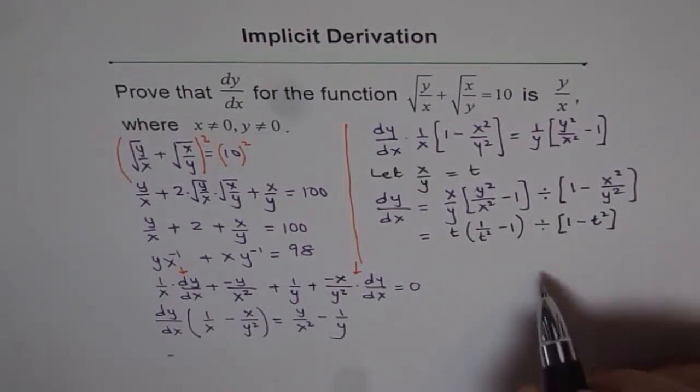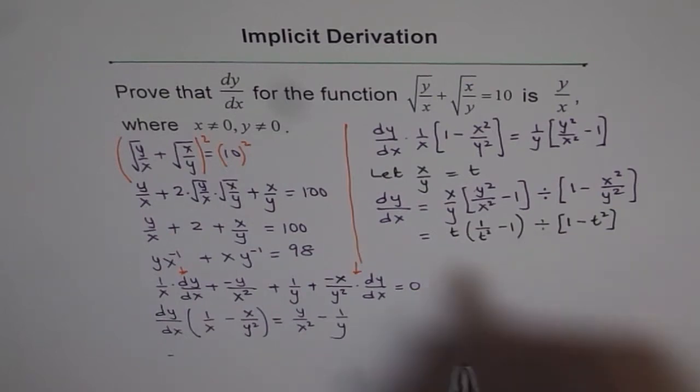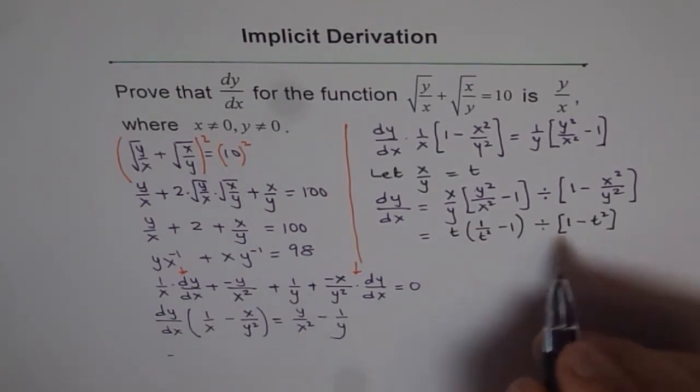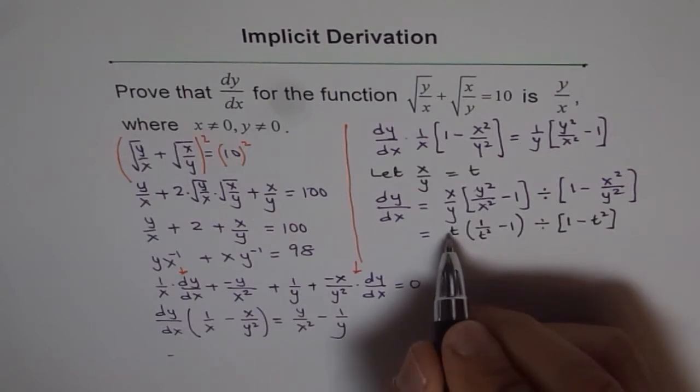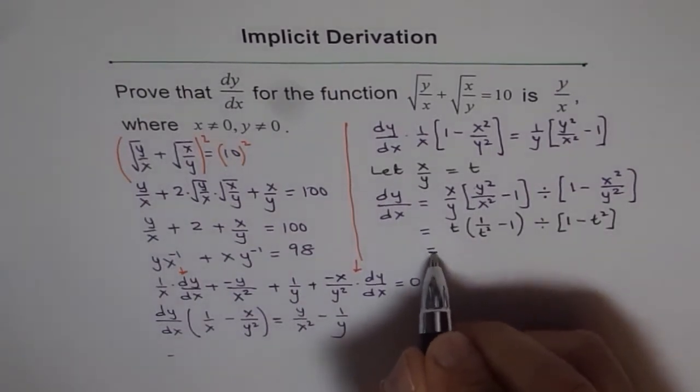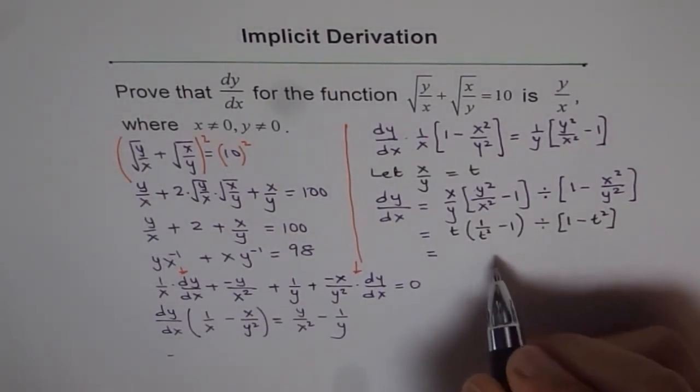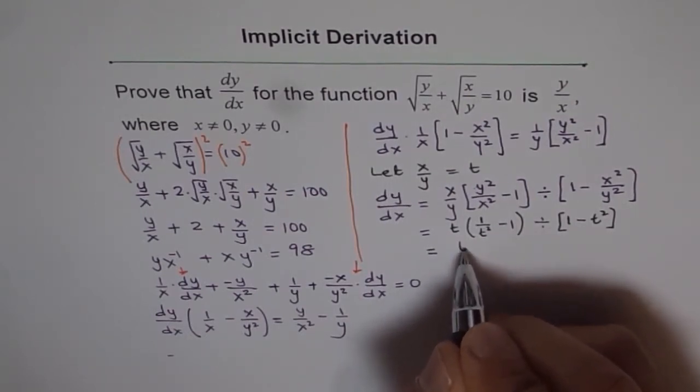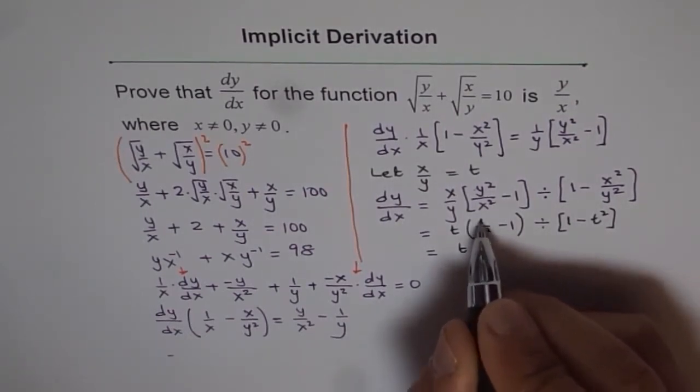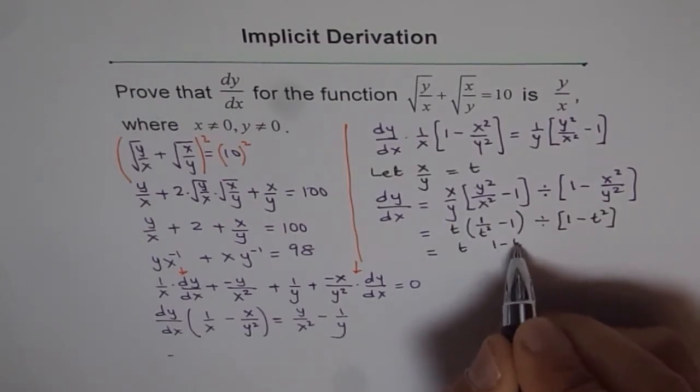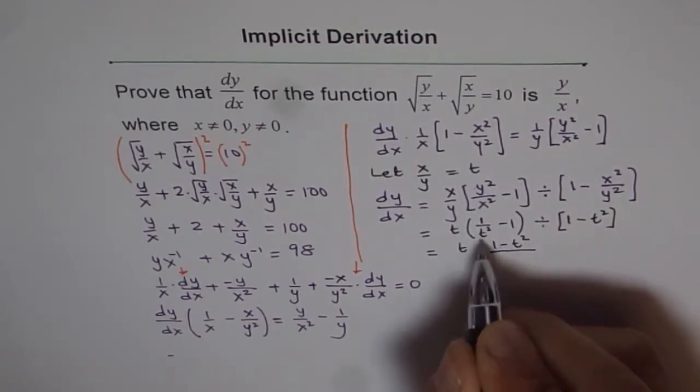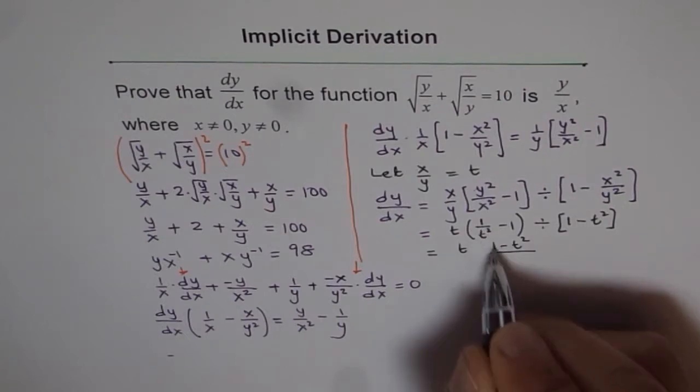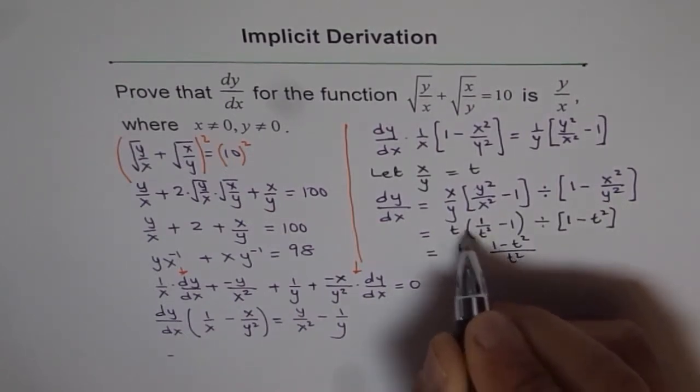So that's what we get. And now we can simplify it and get... So when we simplify this, let me write it in three layers. t times (1 - t²)/t². So we took common t². So this is my first term.